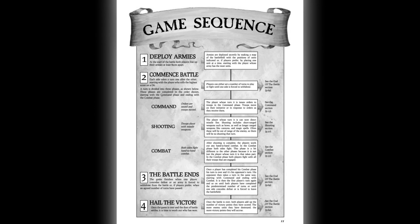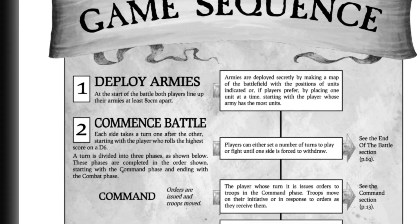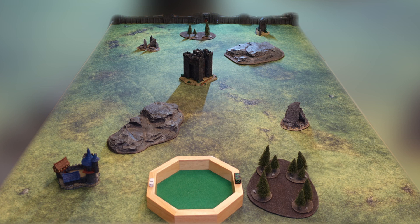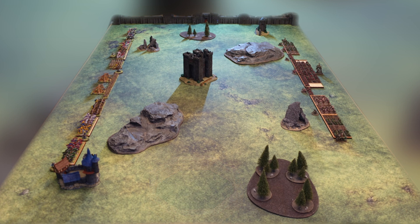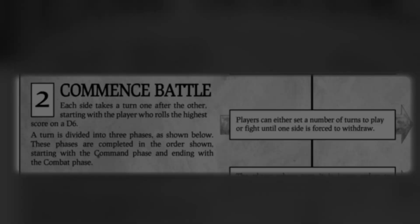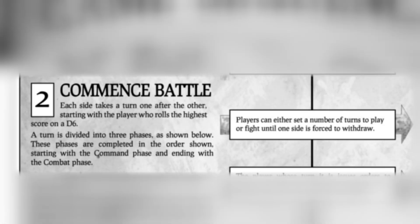A typical game begins with both sides deploying their armies. There are several ways players can mutually agree to set up their armies, which will be discussed later. For now, both players can either secretly write down where their units will be deployed and deploy simultaneously, or alternate placing one unit at a time, starting with the player with the most units. Armies should be set up at least 80 centimeters apart from each other.